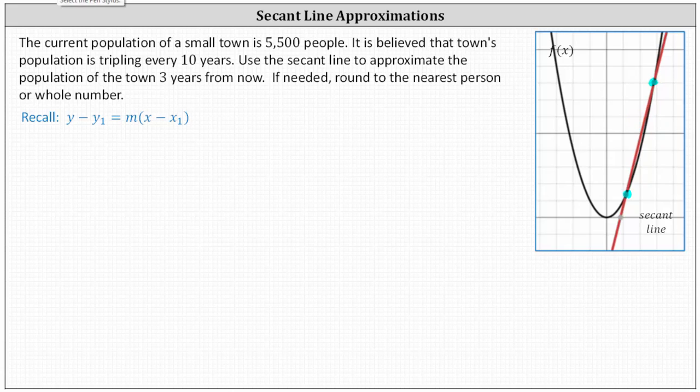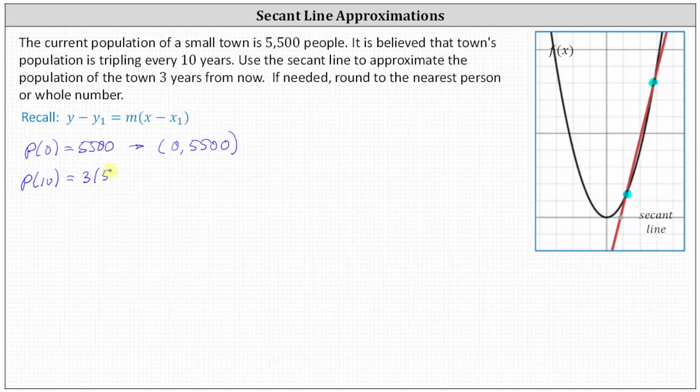Going back to our problem, because the initial population is 5,500, let's say P of zero equals 5,500, which corresponds to the point zero comma 5,500, which is on the population function as well as the secant line. And because the population triples every 10 years, we know P of 10 is equal to three times 5,500, which would correspond to the point 10 comma 16,500.